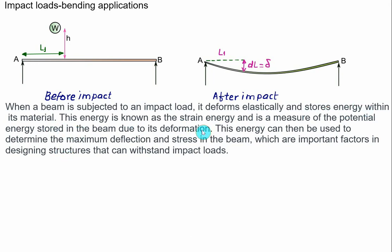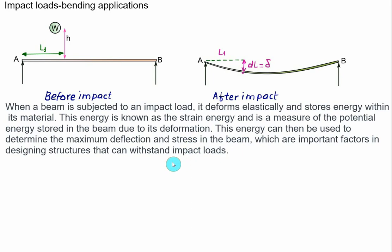This energy is known as strain energy and is a measure of the potential energy stored in the beam. Initially, velocity is zero, and finally when the beam reaches maximum deformation, the velocity of the load is also equal to zero. Only the change in potential energy is responsible. This energy is used to determine the maximum deflection dl and the stress in the beam.